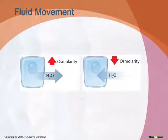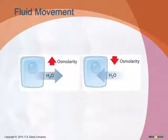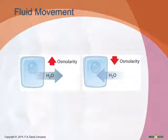If the osmolarity or concentration of tissue fluid increases, water moves out of the cells and into the tissues. If osmolarity decreases, water moves out of the tissues and into the cells. This passage of fluid happens really quickly — within seconds — in order to maintain equilibrium or homeostasis.